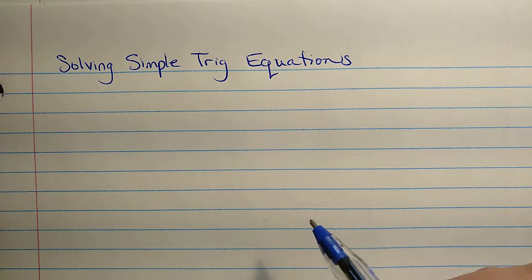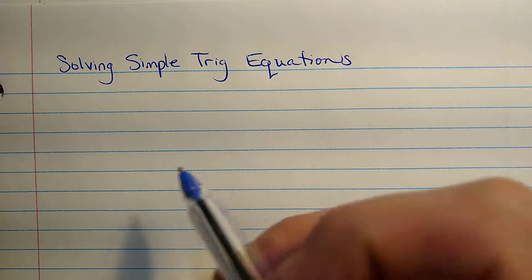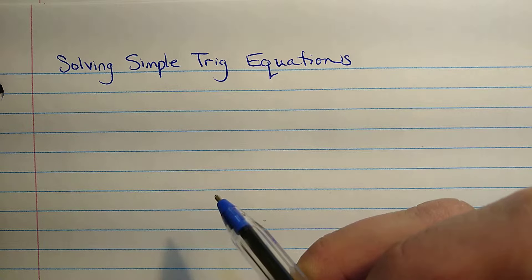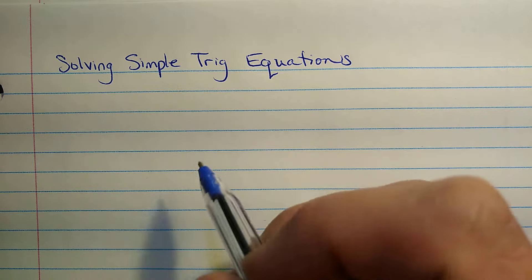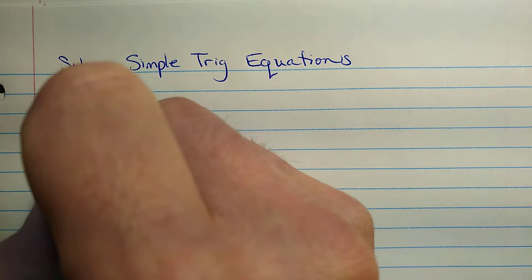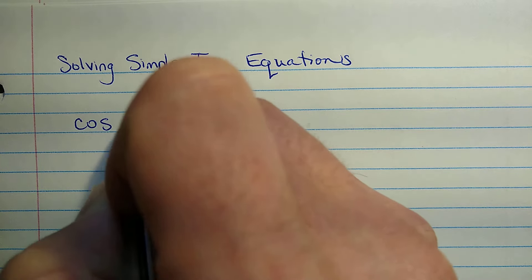Those are ones that have just a single primary trig ratio, kind of a regular equation, no quadratic equations or anything like that, just linear. So we'll do a couple of examples. The first one will be a little simpler than the second one.